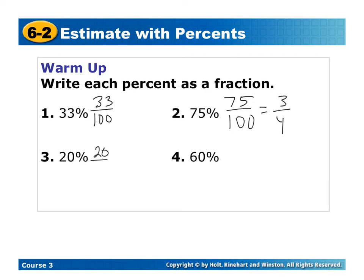20% is going to be 20 out of 100, which is going to reduce to 1 fifth, sorry. And then 60%, it's going to be 60 out of 100, which is 3 fifths.